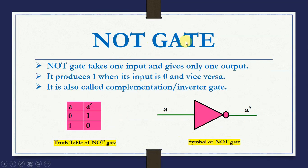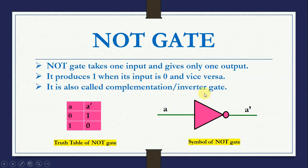NOT gate takes 1 input and gives only 1 output. It produces 1 when its input is 0 and vice versa — when its input is 0, its output is 1, and when its input is 1, its output is 0.